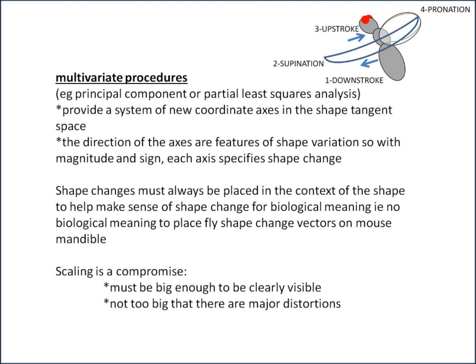Shape change must always be placed in the context of the shape. This helps to make sense of what the shape change means. For example, it's great having vectors, but it's a lot easier to visualize if you've got a wing and can say, okay, this landmark moves in this direction rather than just the vectors. It also instills biological meaning. For example, if you think of a fly wing and a mouse mandible, you might have 15 landmarks in each, but there's no biological meaning if you place the fly shape change vectors on a mouse mandible. There's no logical reason why you would do that. There's no crossover between the two species in any way.